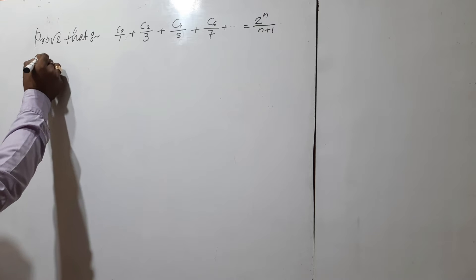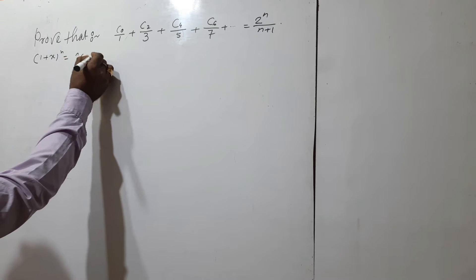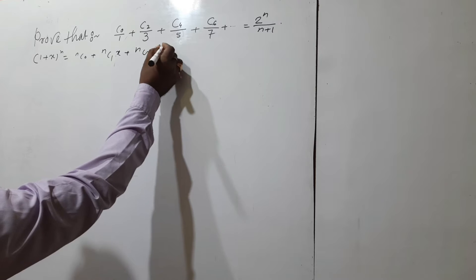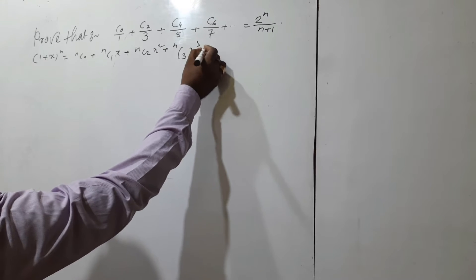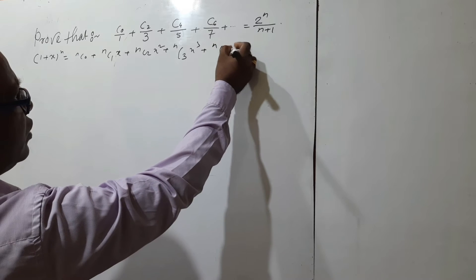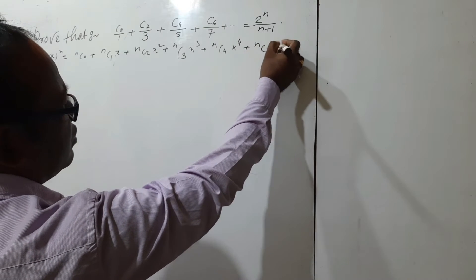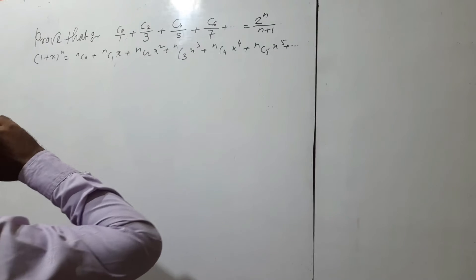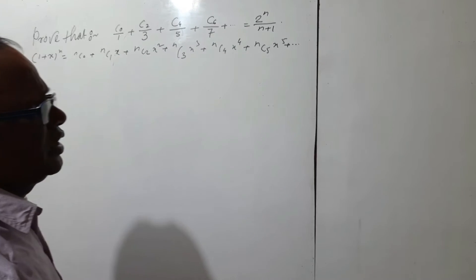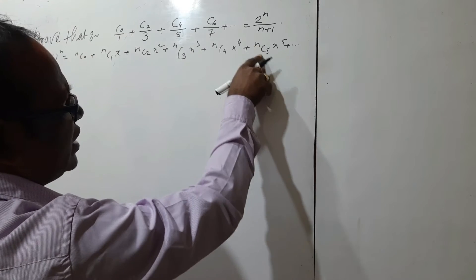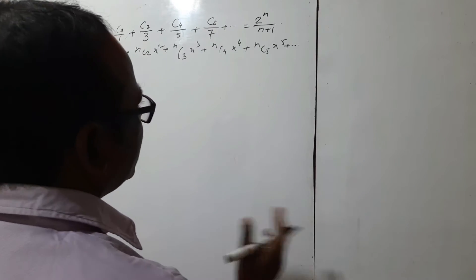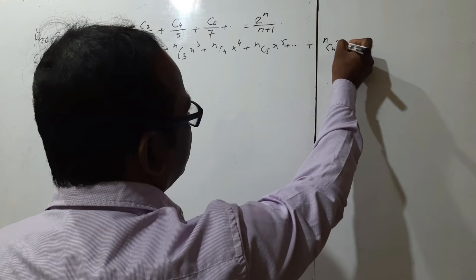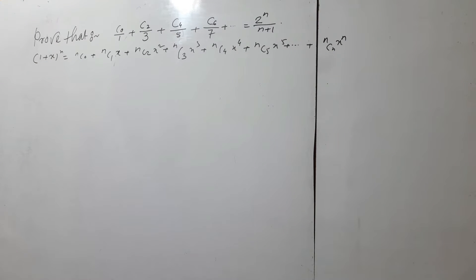The binomial theorem states that (1+x)^n equals nC0 plus nC1·x plus nC2·x² plus nC3·x³ plus nC4·x⁴ plus nC5·x⁵, and so on. This is a finite value since n is an integer, with the ending term being nCn·x^n, so the degree here is n.